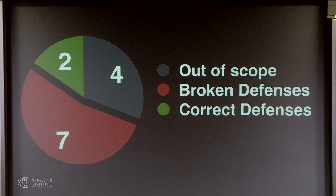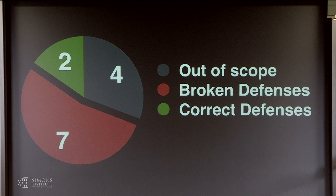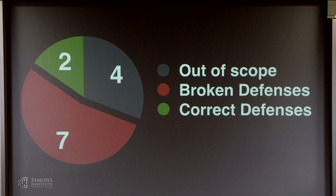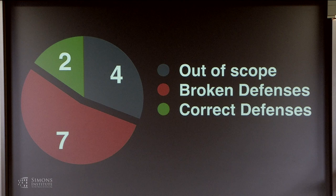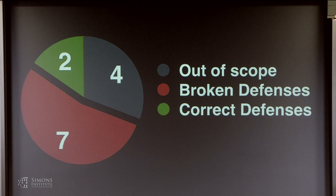By 'correct' I mean the claims made in the paper were right — we tried to lower the accuracy and failed. By 'broken' I mean the claims were largely wrong. If we couldn't invalidate a claim, we believed it. Someone who tried harder could potentially do better, but we won't say something is wrong unless we can show it's wrong — innocent until proven guilty.